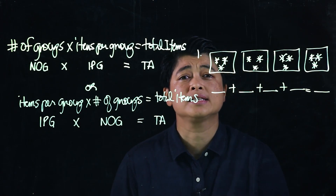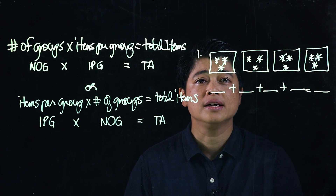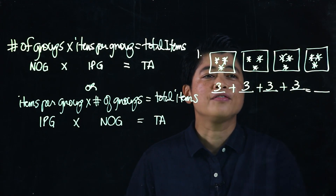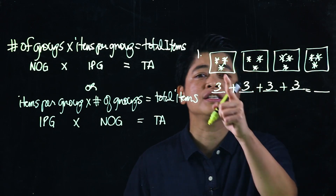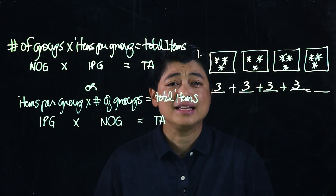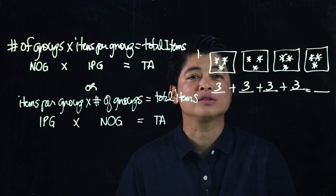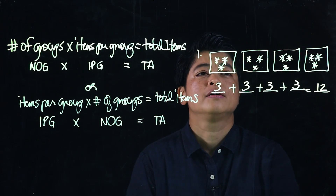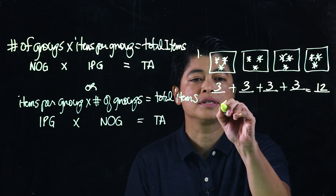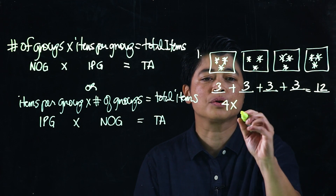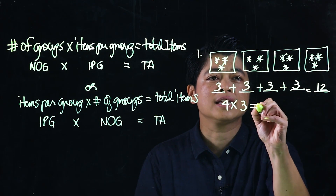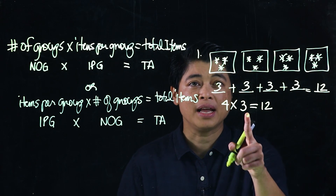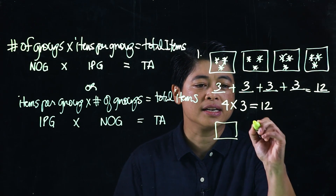Multiplication is technically a repeated addition, so that's three plus three plus three plus three. At this point, we need our children to just count what's inside the box, but in the next chapter they need to be able to multiply already. If we count, that will be 12 clips. The multiplication version: number of groups is four, items per group is three, and the total is 12.